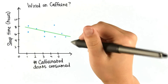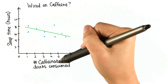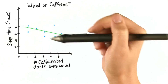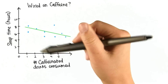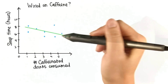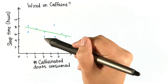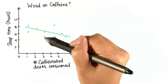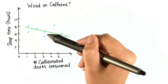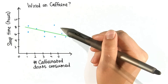This scatter plot here shows the relationship between the number of caffeinated drinks people consume and the hours that they sleep. Each of these dots represents one person. So, for example, this person consumed about three caffeinated drinks and only slept about five hours.